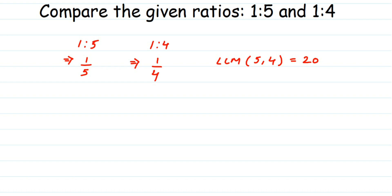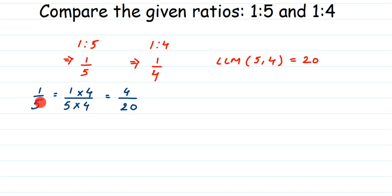Now we change each fraction to an equivalent fraction with denominator 20. For 1/5, we ask: what do we multiply 5 by to get 20? The answer is 4. So we multiply both numerator and denominator by 4: 1 × 4 = 4 and 5 × 4 = 20. So the equivalent fraction is 4/20.